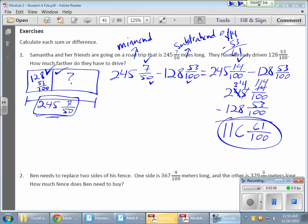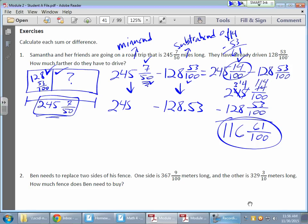Or the decimal route. Now, the decimal route, this one's nice and clean. 128 and 53/100, that works out nicely. There's 53/100, and that was my subtrahend. So now for my minuend, I have 50ths, but if I turn that into 100ths, there's my 14/100. So 245 and 14/100, which is working out pretty nicely.